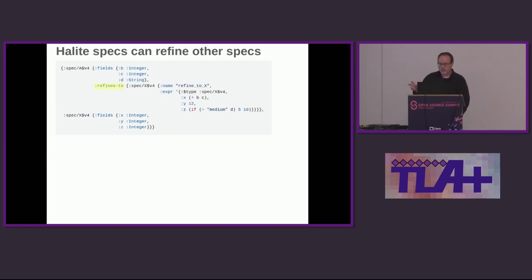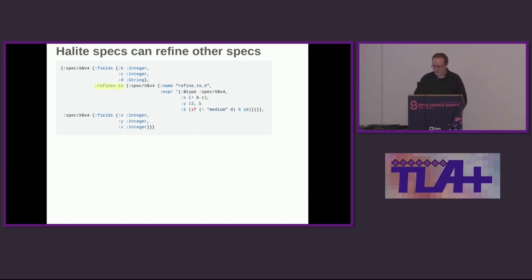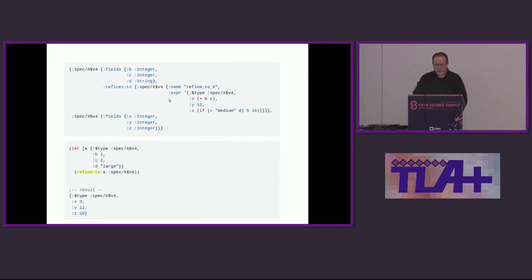There are two features in Halite that let you have references between specs. One is via refinement — that's pretty much TLA+ refinement. In this example there's a spec X with fields X, Y, and Z, and a spec A with fields B, C, and D. The refinement defines how A refines to X. At the REPL you can exercise refinement: if you had an instance of A, you can ask it to be translated into or refined to the state space from X, and this is the result it would produce.